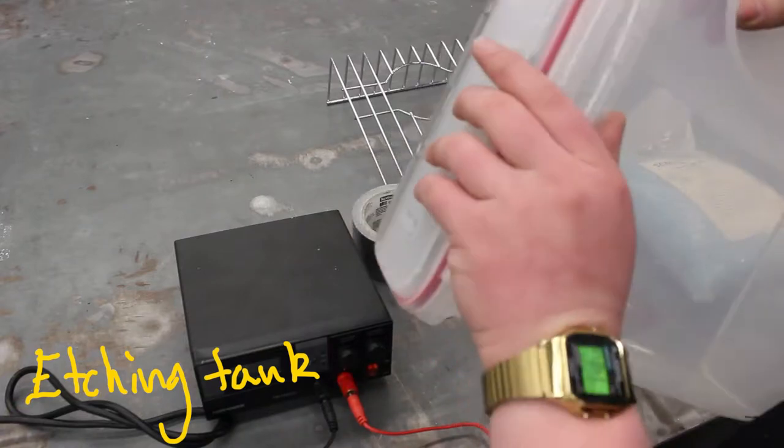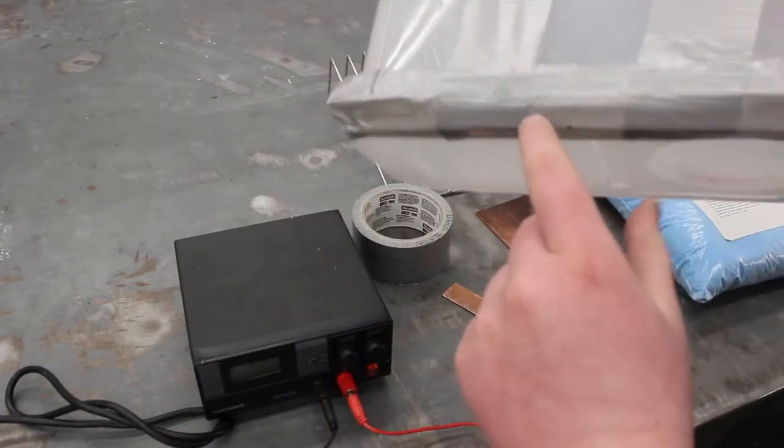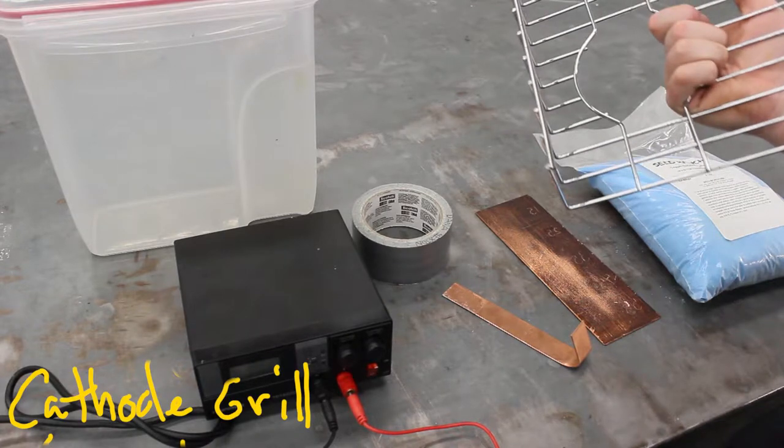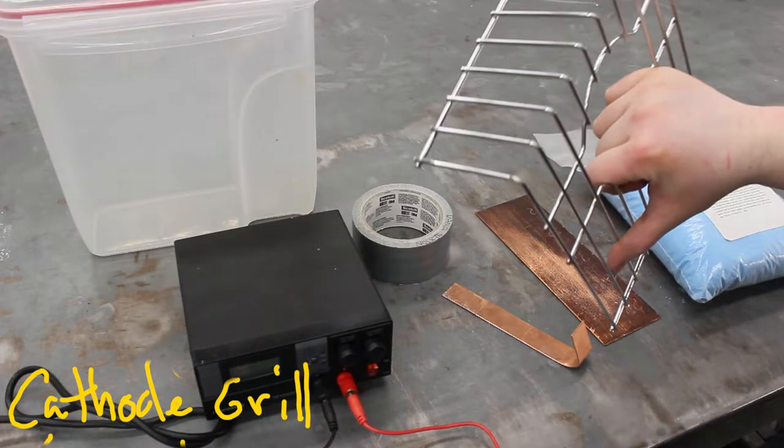You're going to need an etching tank. This is a cereal container I found at Target. It was already broken so I got a discount on it. You're going to need a cathode grill. This is the piece of metal that sits in there with the copper that completes the current inside the water.